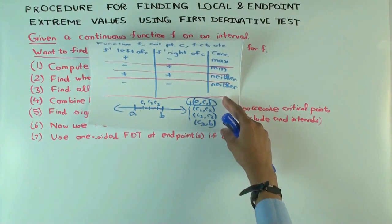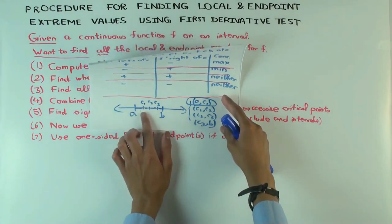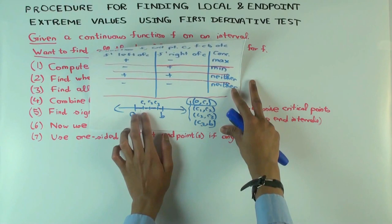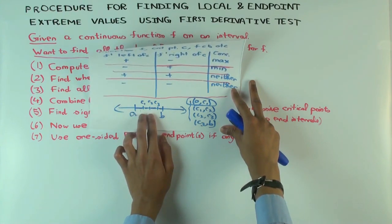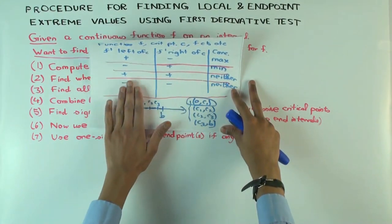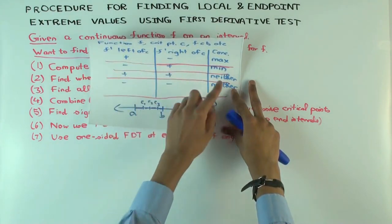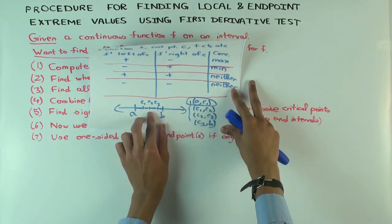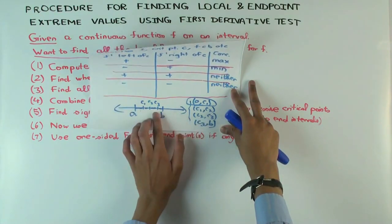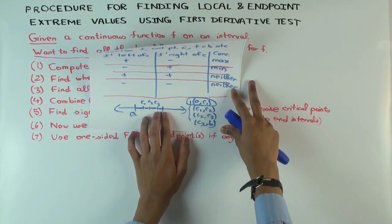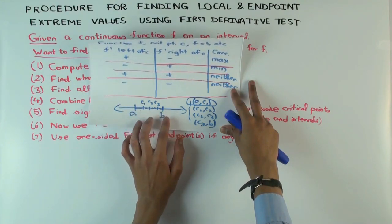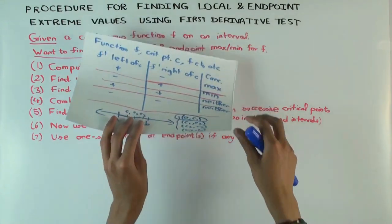To figure out what's happening at C1, you look at the sign of the derivative on the two adjacent intervals: (a, C1) and (C1, C2). Based on that information you look at the table — (a, C1) tells you the left column, and (C1, C2) tells you the right column — and you see whether it's a max, min, or neither. Similarly at C2, you look at (C1, C2) and (C2, C3). At C3, you look at (C2, C3) and (C3, b). For endpoint A, you look at interval (a, C1), and for endpoint B, you look at interval (C3, b).